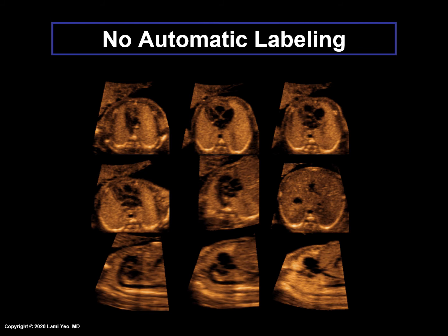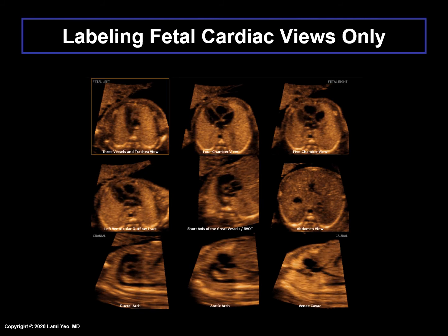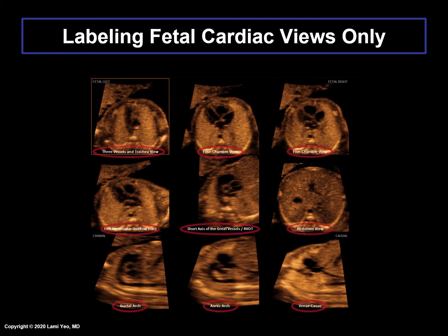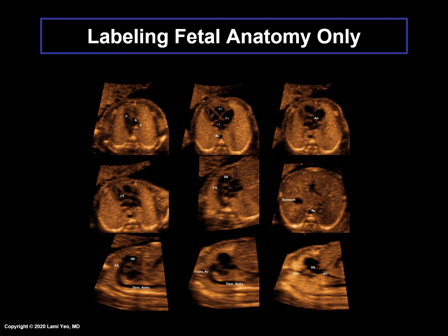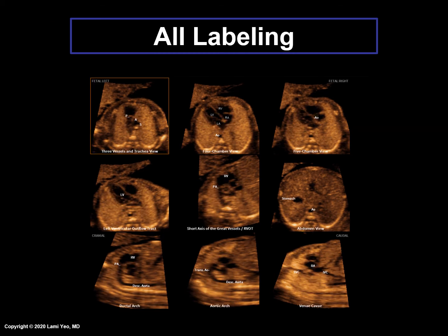Here is an example of the nine cardiac diagnostic planes with no automatic labeling shown. In this next example, only the fetal left and right sides, cranial and caudal ends, and fetal cardiac views are labeled. Automatic labeling of fetal anatomy only is shown here. And finally, here is an example of all automatic labeling performed by FINE.